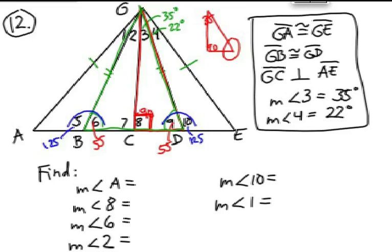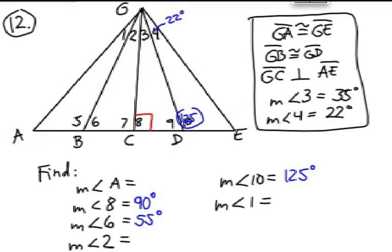Notice that this whole diagram is balanced because of the isosceles triangles. So, an angle on the left-hand side of the diagram, such as angle A, must be congruent to an angle in its opposite orientation on the other side, angle E. So, what we have so far is measure of angle 8 is 90 degrees, measure of angle 6 is 55 degrees, measure of angle 10, 125 degrees.